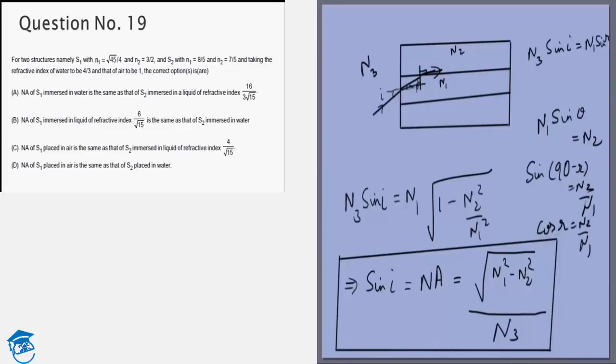So you can put the values of all four options in this and you will find out that only option A and C are correct. After getting this formula, putting in the values is trivial, so I hope you can do it on your own.